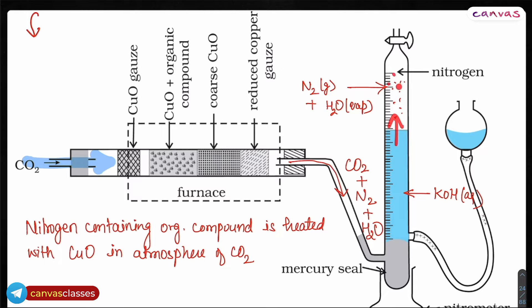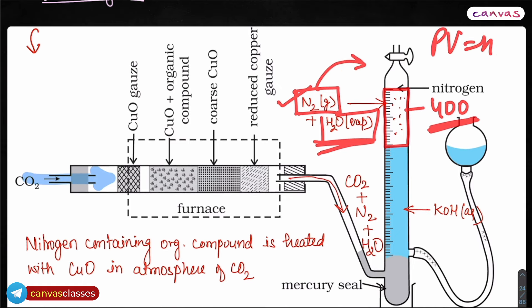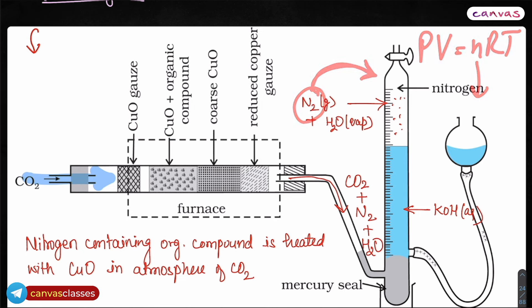So the total pressure here, let's say it comes to 400 — this is not the pure nitrogen gas pressure; it is the pressure of nitrogen as well as water vapor. The water vapor pressure (aqueous tension) is given to you, so you subtract it from 400 to get the pressure of N₂. Once you have the pressure, and the volume is read directly from the graduated scale here, you can use PV = nRT to get the number of moles, and then calculate the weight of nitrogen for the percentage equation.